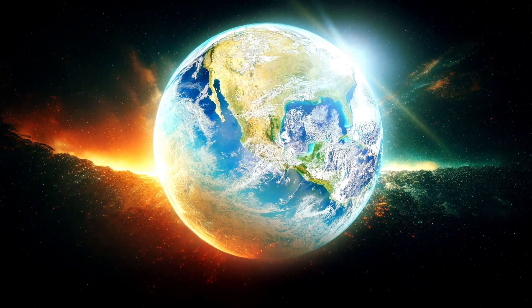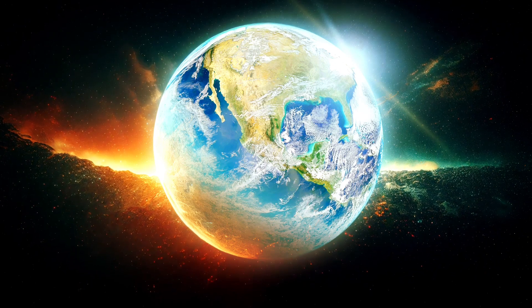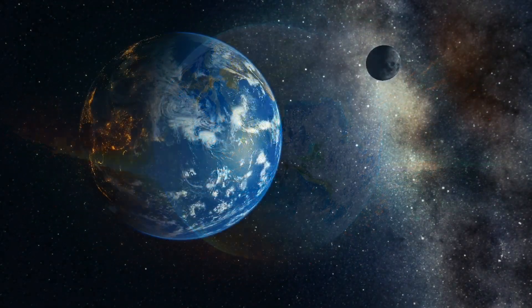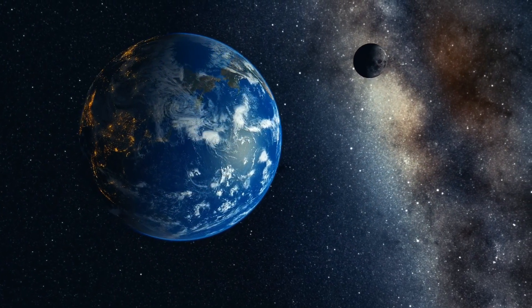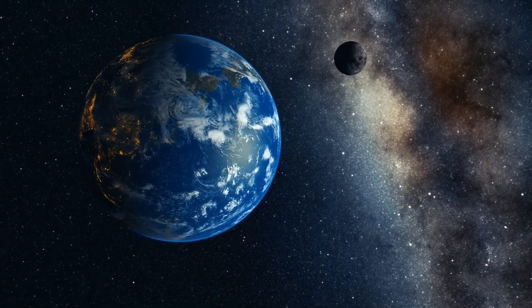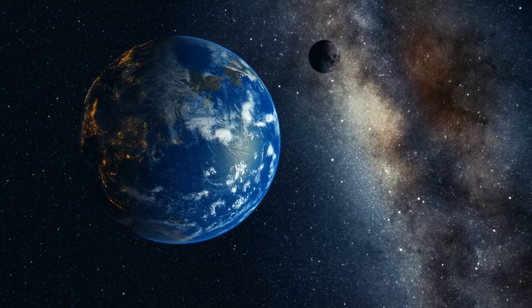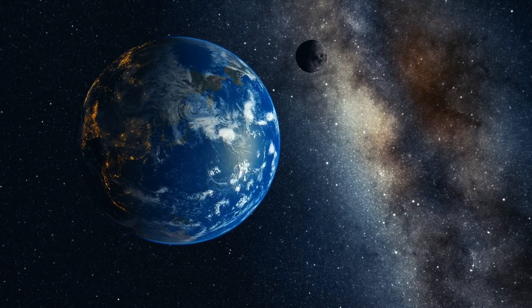As the Earth continued to cool, its atmosphere and oceans began to form. The atmosphere was likely initially composed of gases such as carbon dioxide, water vapor, and nitrogen, while the oceans formed from the accumulation of water vapor and other volatile substances on the Earth's surface.